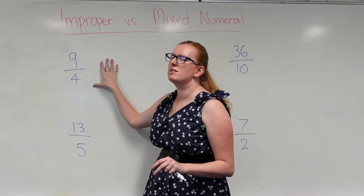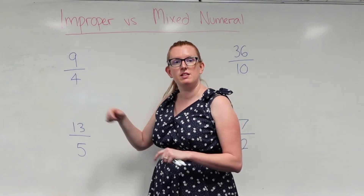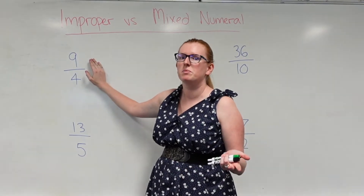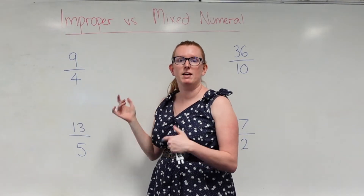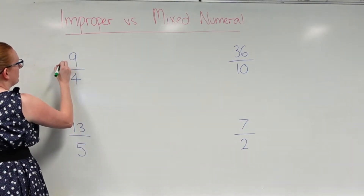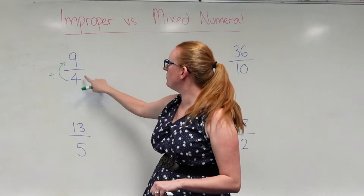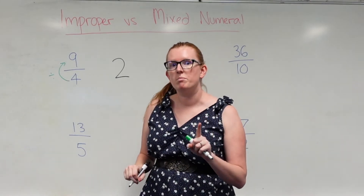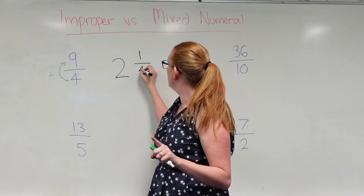For example, if this were a pizza — because I love pizza — if the pizzas are cut into slices of four and I've eaten nine slices, I've eaten way more than one whole pizza. So I want to find out how many whole pizzas I've eaten and then how many additional slices I've had. We're going to divide the top number by the denominator. How many fours go into nine? Two. But we have one remainder, so that one remainder becomes our numerator for the proper fraction.